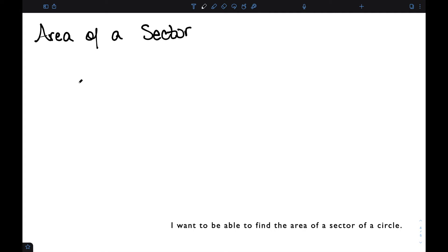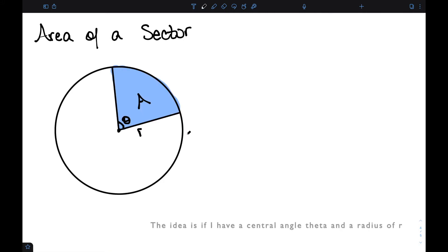I want to be able to find the area of a sector of a circle. If I have a central angle theta and a radius of r, I want to know the area of this intercepted piece.